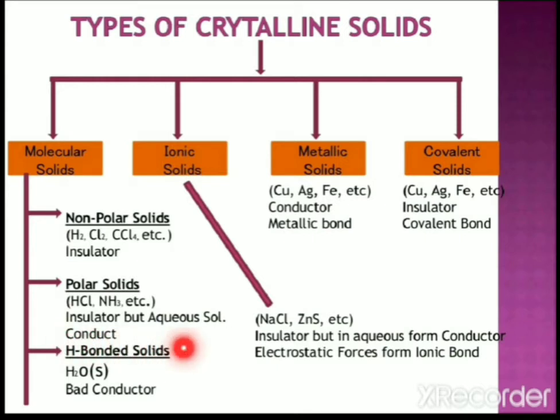In hydrogen bonded molecular solids, the molecules contain polar covalent bonds between hydrogen and more electronegative elements such as fluorine, oxygen, or nitrogen atoms. Strong hydrogen bonding binds the molecules of such solids — like water (ice). They are non-conductors of electricity and are generally volatile liquids or soft solids at room temperature.